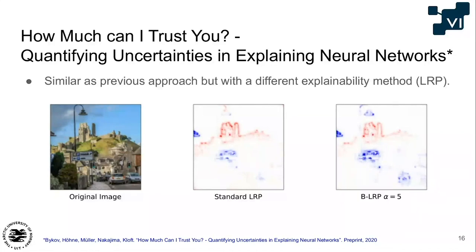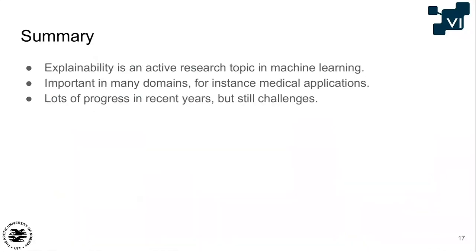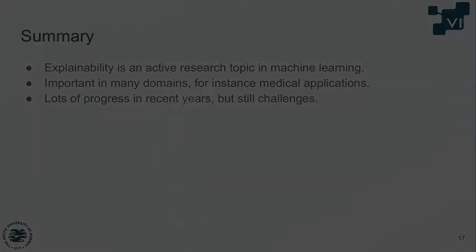To summarize: explainability in machine learning is a very active research topic. Most major conferences now have their own explainable AI track or workshops, and a lot is happening. These techniques will be crucial when deep learning moves into new domains where explainability is needed, for instance in medicine. There's been a lot of progress — the methods we have now compared to five years ago have improved enormously. But as I hope I showed throughout this presentation, there are still many challenges, which is part of what this center will try to solve. Thank you all for your attention.